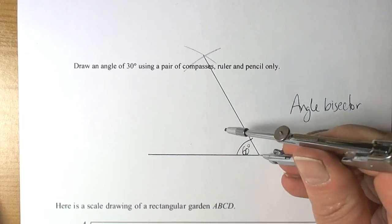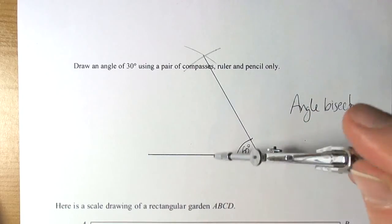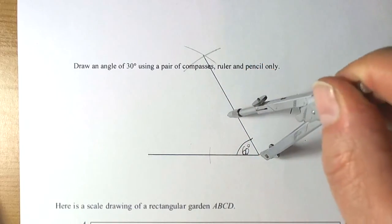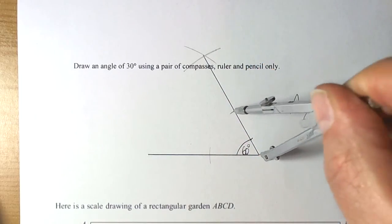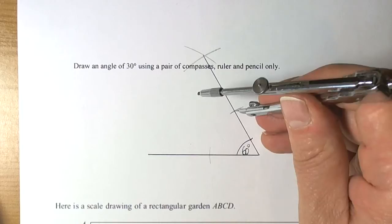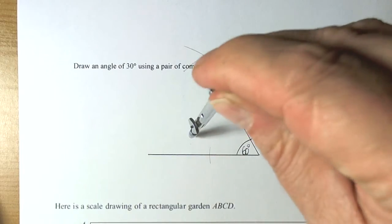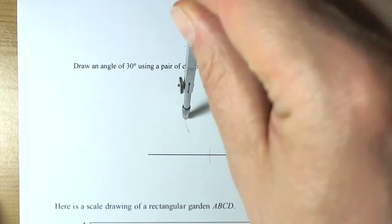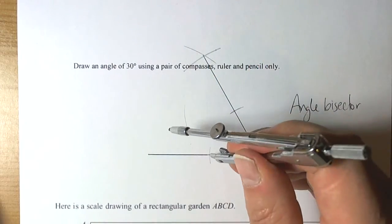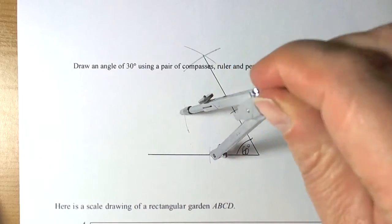To draw an angle bisector, if you remember, we get a compass and we open up any distance that's comfortable and we draw some arcs through the two lines that meet to make the angle. And where the two arcs cross the straight lines that make the angle, we then draw two more arcs somewhere in the middle of where the angle is, so that we can get two arcs to cross each other.